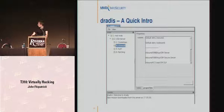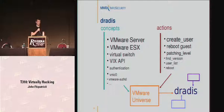How does Dradis work? We've got concepts — in this case the concepts of a VMware server, an ESX server, even a virtual switch or network interface. And we have various actions we might want to perform, such as creating a user, rebooting a box, checking the patch level. We build all of them into what's described as a universe — our universe describes all these different concepts and actions. In this case it's a VMware universe, but it could be anything. You could have a universe to describe your network with web servers, mail servers, and different actions like checking the version. You just plug it in as a module.